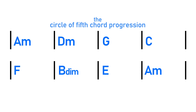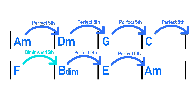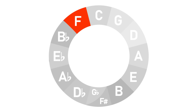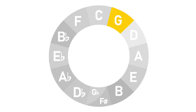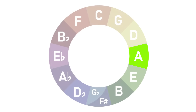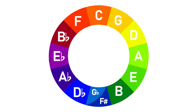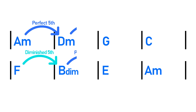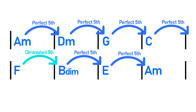I mentioned earlier that in the circle of fifths chord progression, every chord is moving by a perfect fifth apart from one — that chord change is the interval of a diminished fifth instead. So why is this here? Why can't we just make every chord change a perfect fifth? Well, that's because to have a chord progression that purely used perfect fifths, it would have to travel all the way around the circle of fifths, meaning it would take a minimum of 12 chords — and this would make it quite awkward to fit into an eight-bar phrase. So when composers and songwriters use the circle of fifths, rather than making every chord change a perfect fifth, they will tend to make at least one chord change a different interval to allow the progression to neatly resolve back to the tonic chord at the end of an eight-bar phrase.